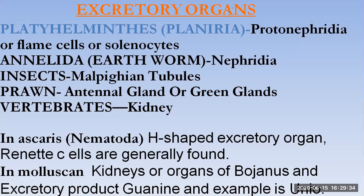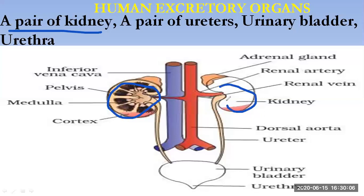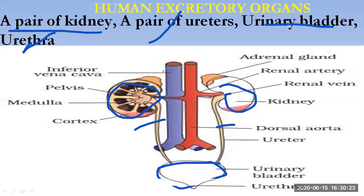Now we will discuss the structure of the kidney — first, the exact location. In humans, the excretory system has four important components: a pair of kidneys, a pair of ureters, one urinary bladder, and one urethra. Looking at the figure, we can see the inferior vena cava, which carries impure blood from different body parts and opens into the right atrium.